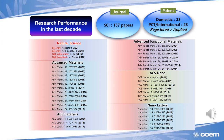Our lab has shown distinguished research performance in the last decade. There are over 157 papers in SCI journals and 56 domestic and international patents. The publications include high-impact journals like sister journals of Nature Science, Advanced Materials, and ACS Nano.